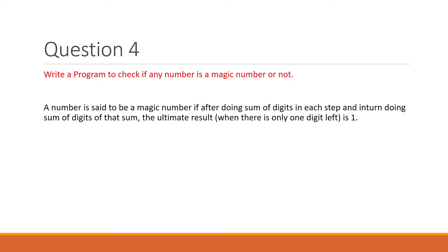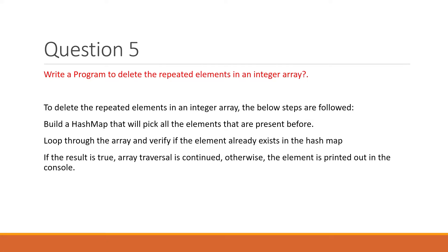The implementation uses a while loop with condition: number > 0. We extract digits using number mod 10, then divide by 10. An additional condition is sum > 9, because if the sum is already a single digit, you don't need to loop again. Keep repeating until you get a single digit and check if it equals 1.